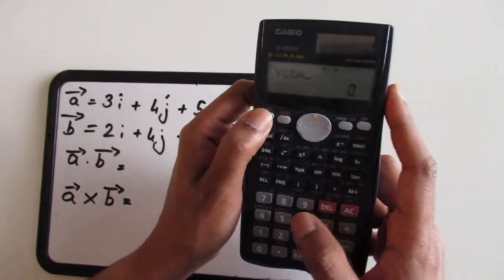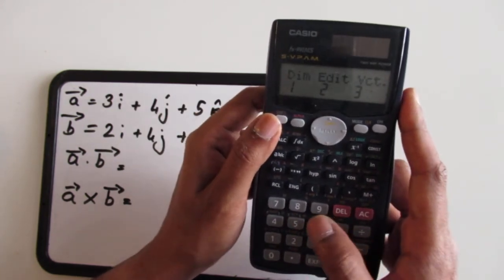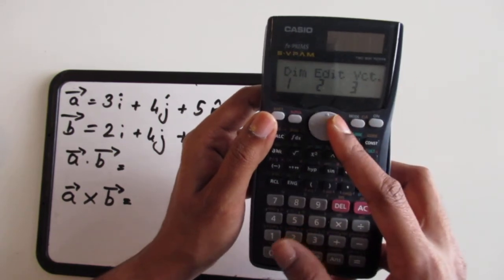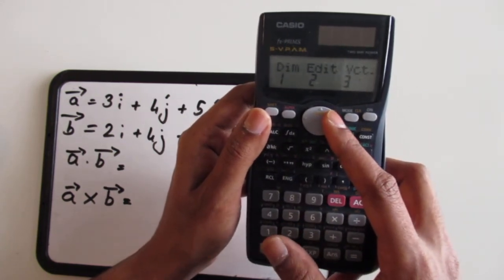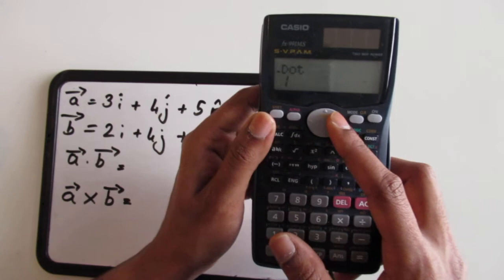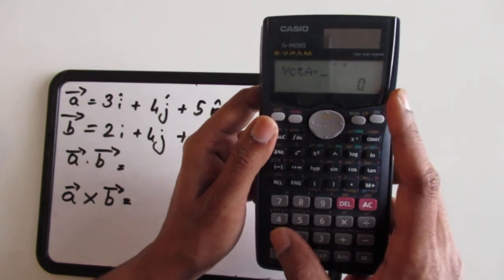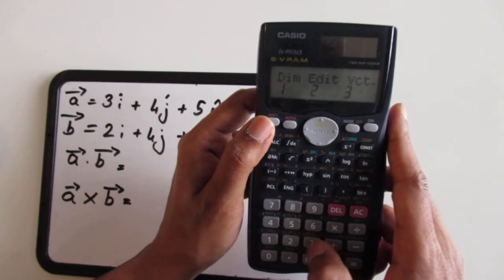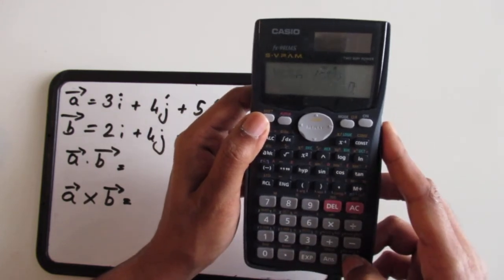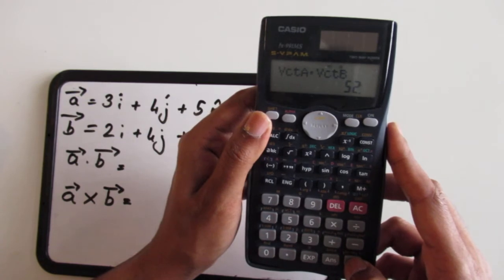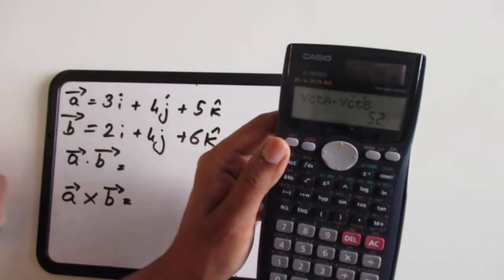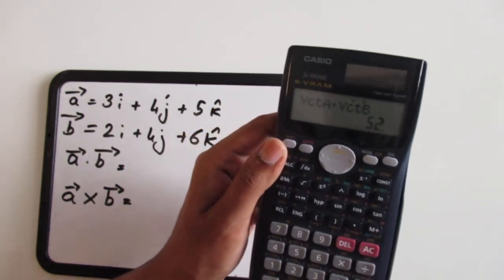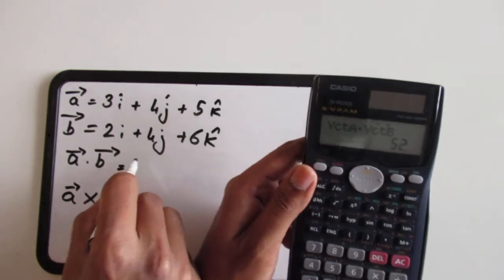Then to select dot product I go shift vector, I have to press the right arrow when I come to this menu and you see the dot, so I'm going to select that and then select vector B and press the equal sign. That gives me 52, so vector A and vector B the dot product is 52.